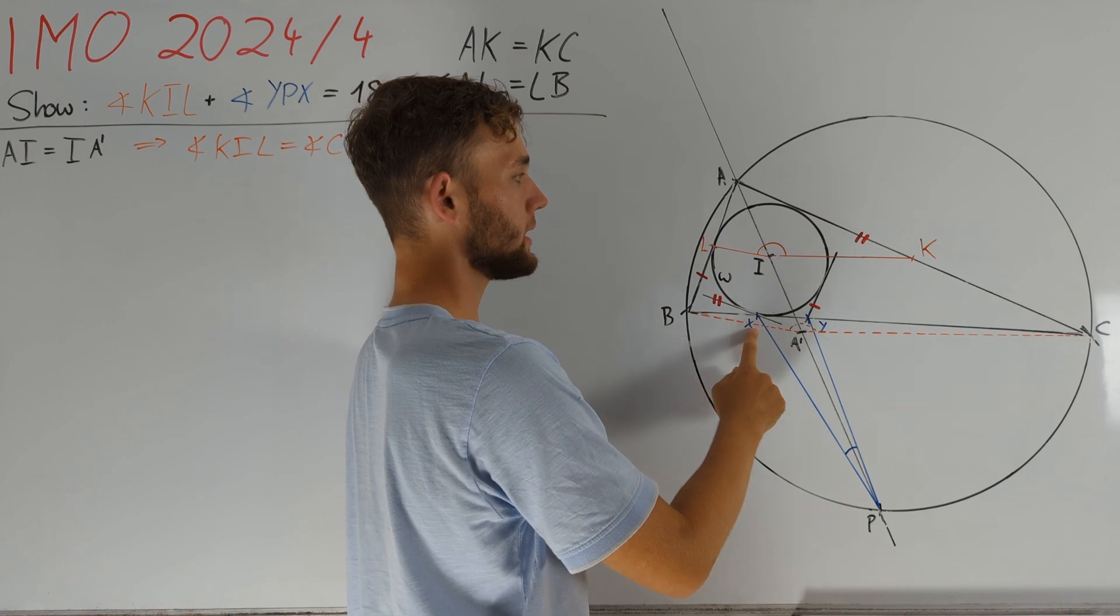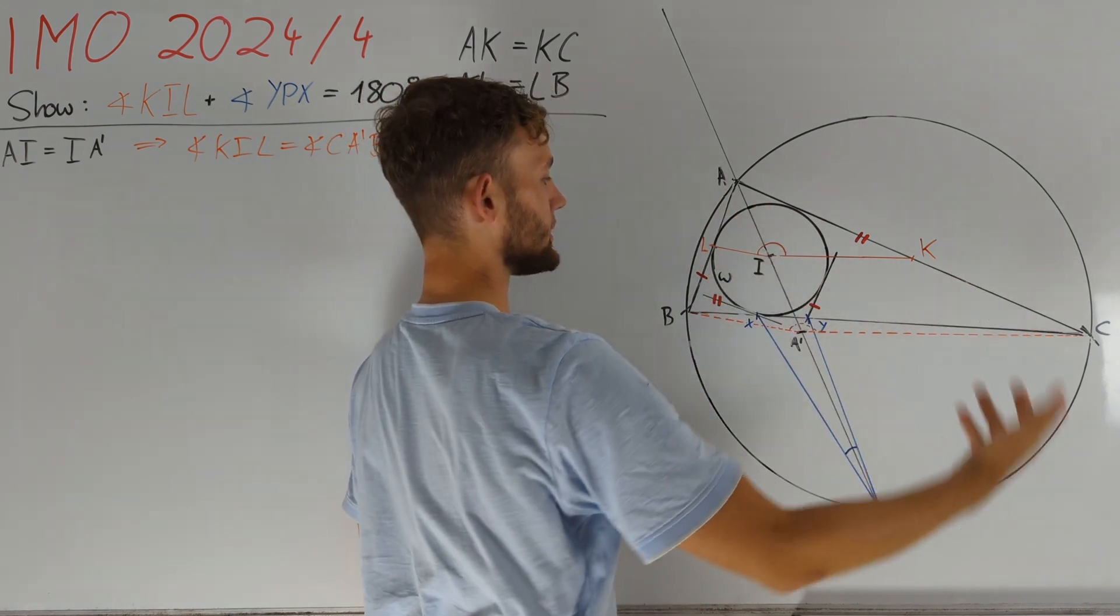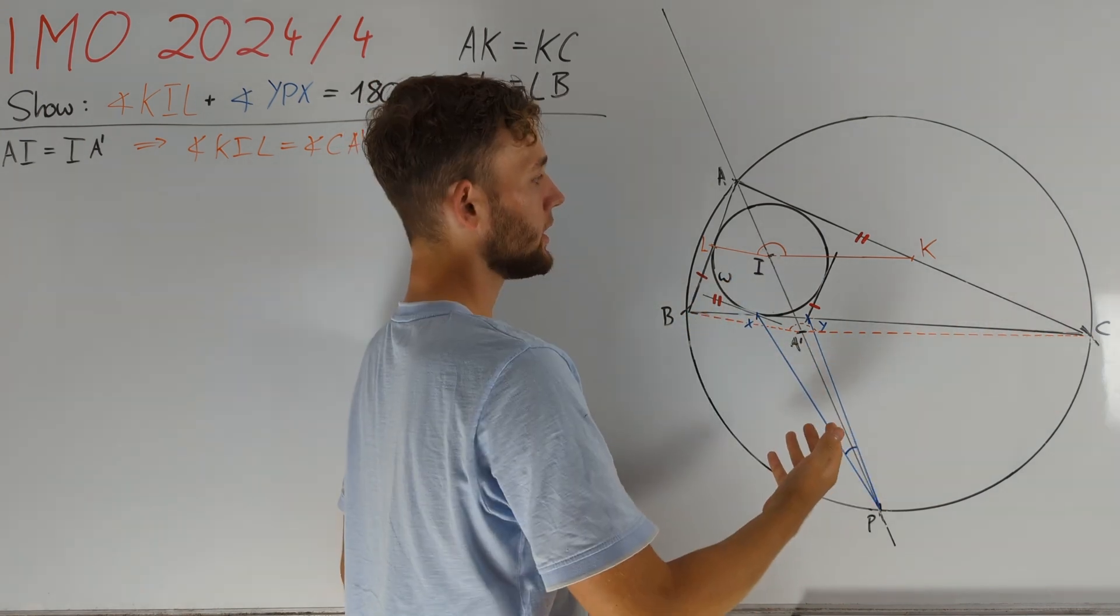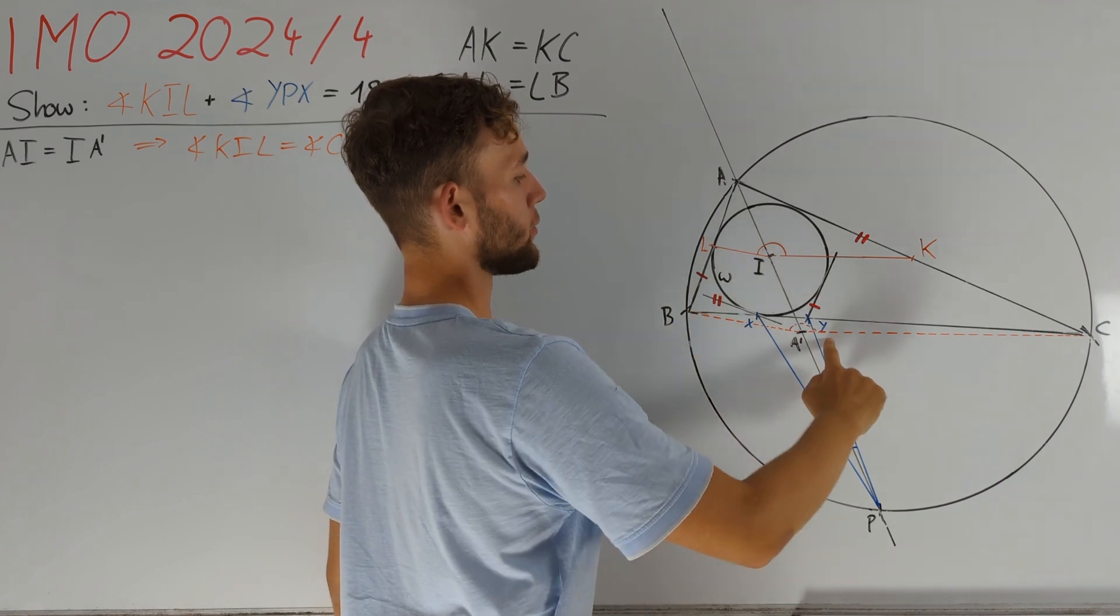Therefore, the reflection of X at I is the intersection of AC with the second tangent of omega that is parallel to BC. Similarly, if we intersect that line with AB, we get the reflection of Y at I.